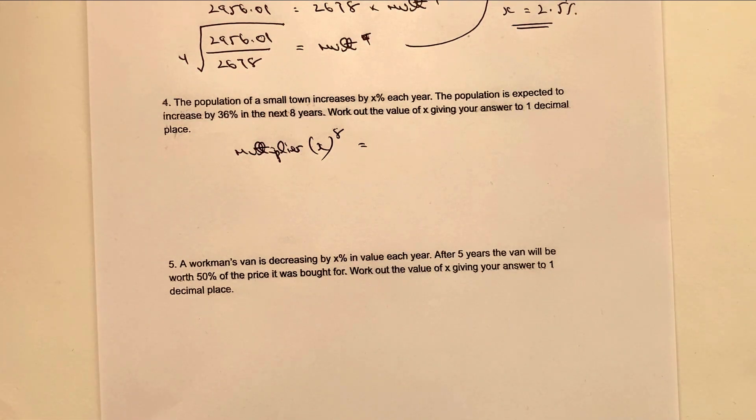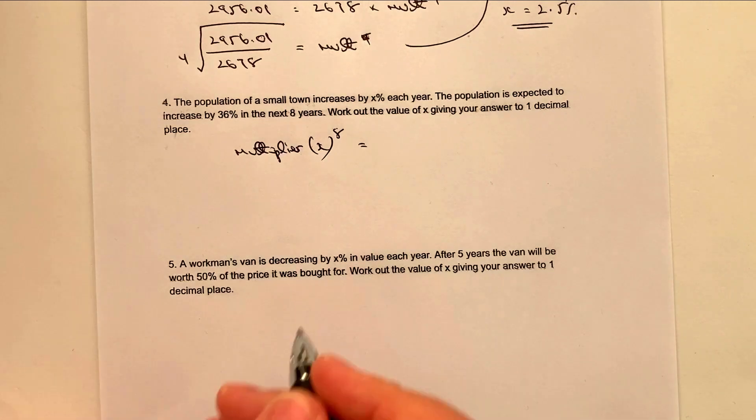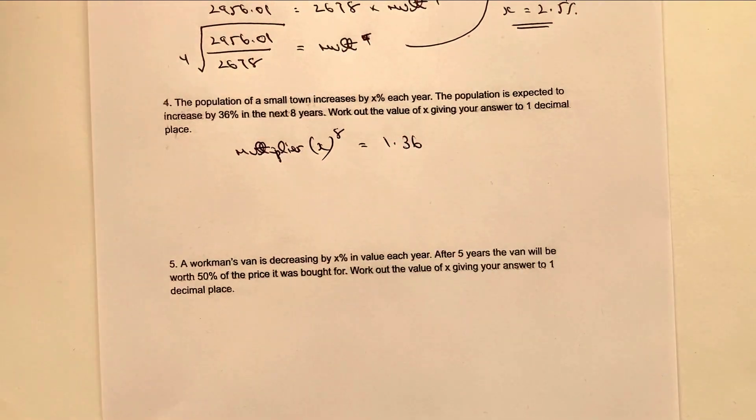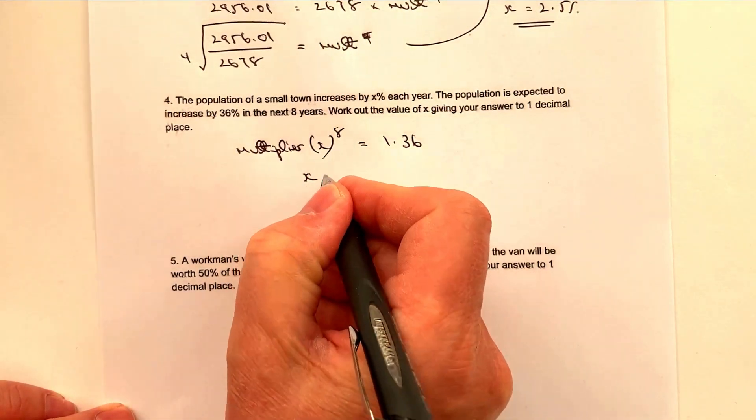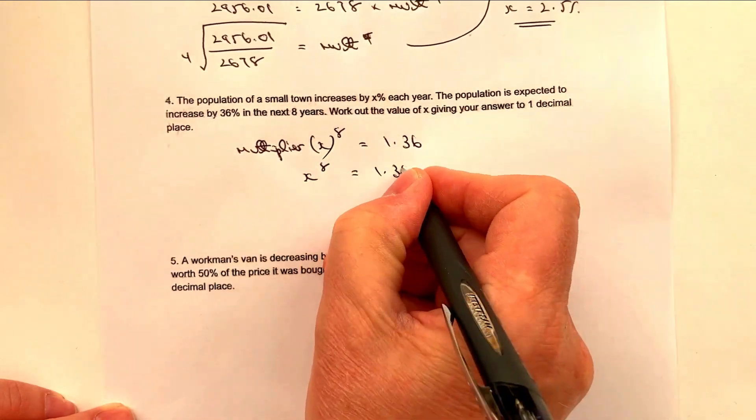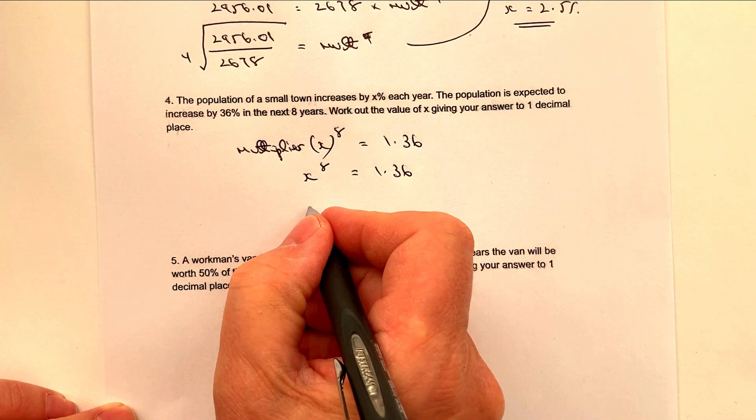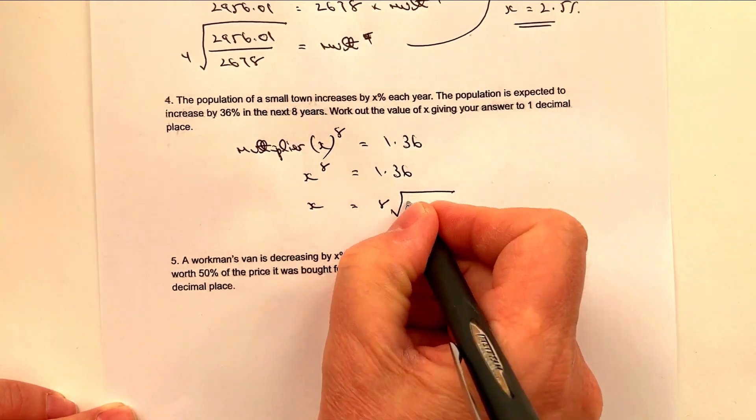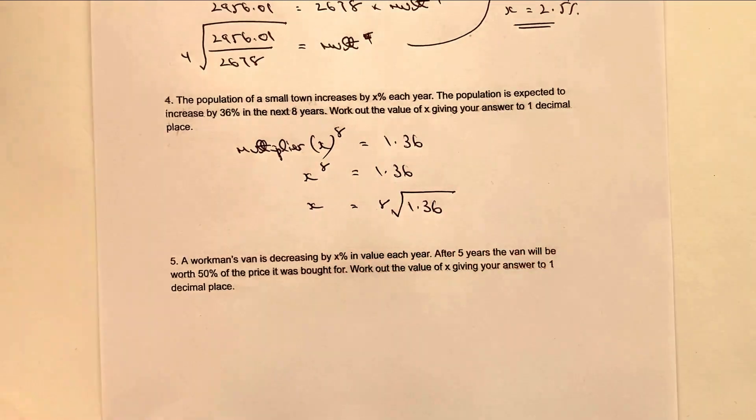Well, that means then we've got to convert that to a decimal. So that's going to be 1.36. And then really it's a case of finding the value of X. So let me just write that out a little bit clearer. I've got X to the eight equals 1.36. So therefore, if I want the value of X, I'm going to do the eighth root of 1.36.